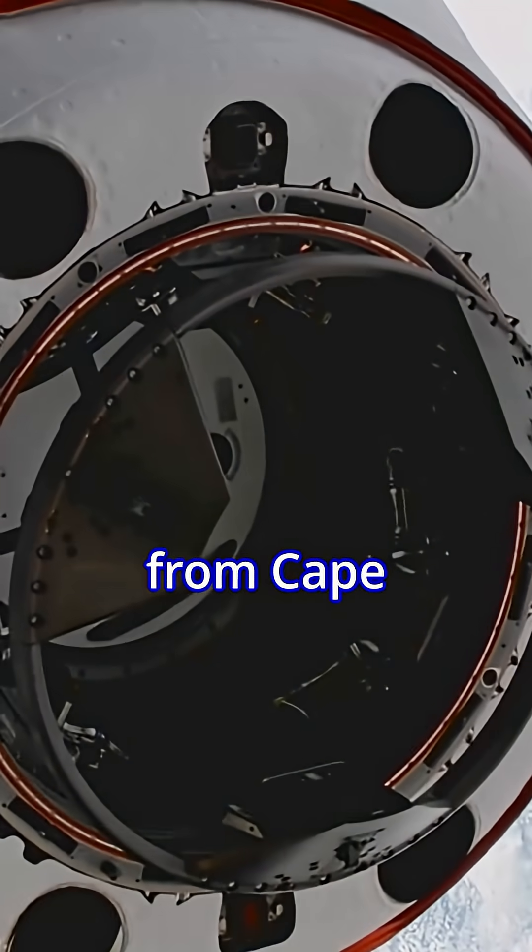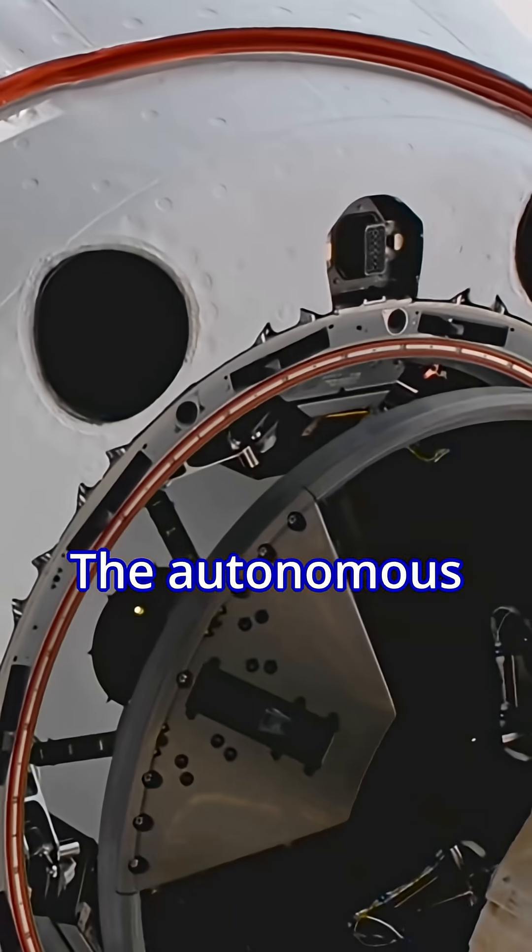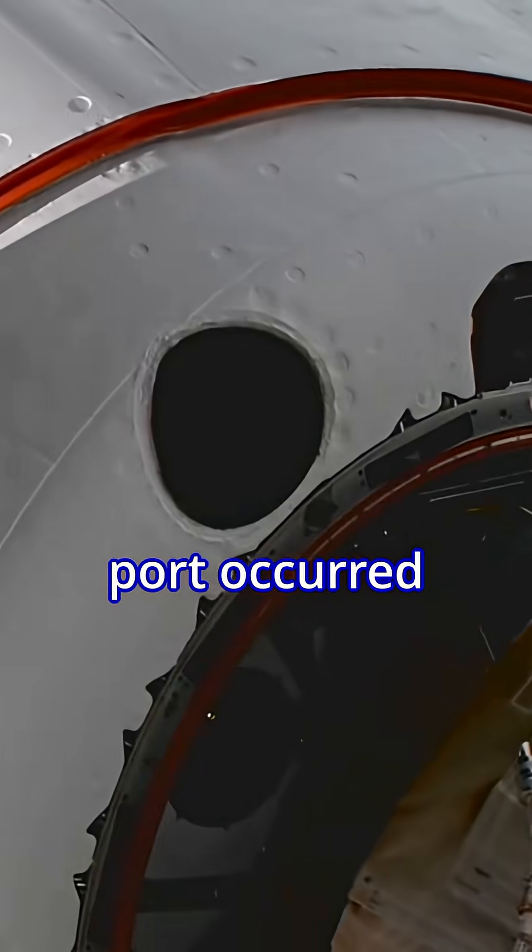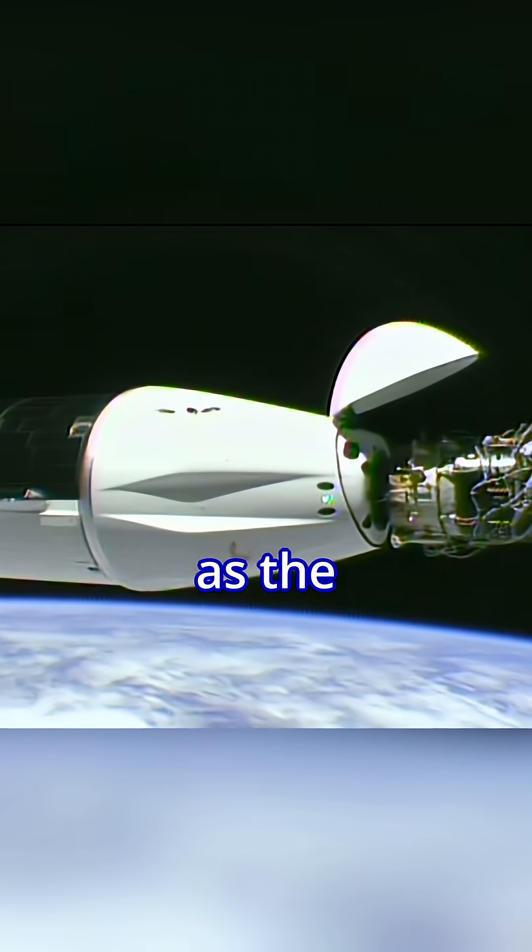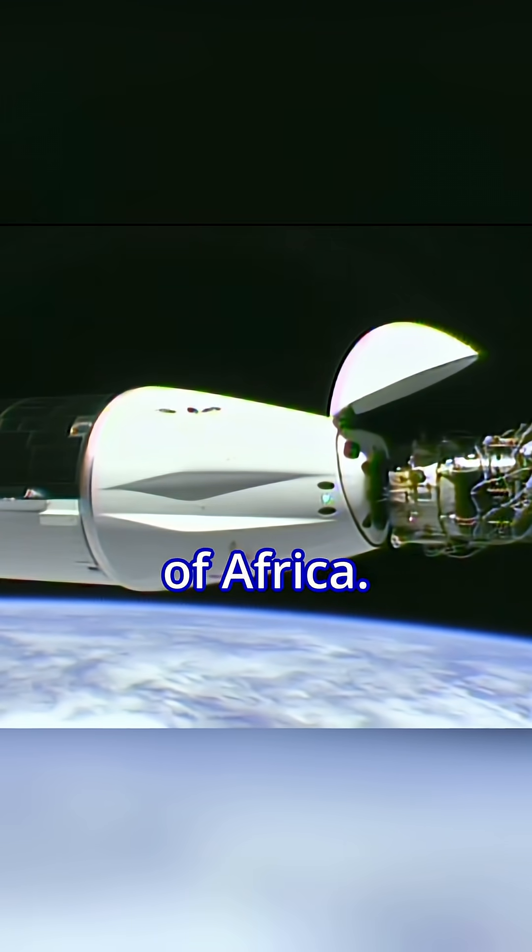The mission launched on a Falcon 9 rocket from Cape Canaveral Space Force Station in Florida early Sunday morning. The autonomous docking to the Harmony Module's forward port occurred at 7:05 a.m. as the two spacecraft orbited 260 miles above the Ivory Coast of Africa.